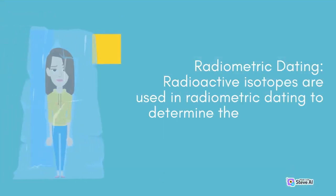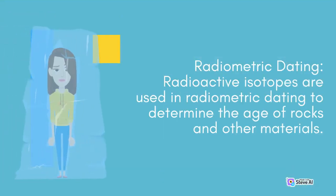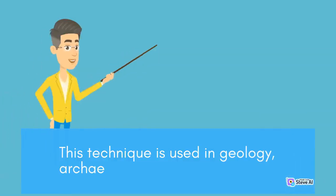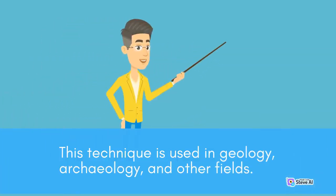Radiometric Dating: Radioactive isotopes are used in radiometric dating to determine the age of rocks and other materials. This technique is used in geology, archaeology, and other fields.